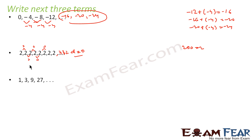One more example. Here the difference is 2, then 6, then 18. The difference is not constant, so it is not an AP.